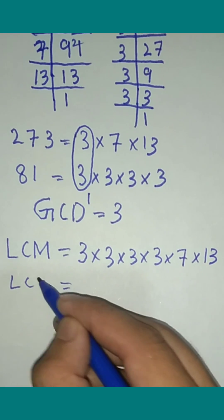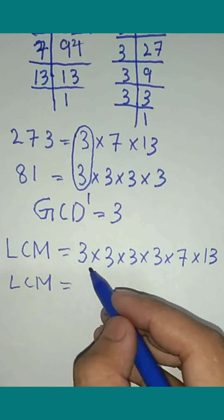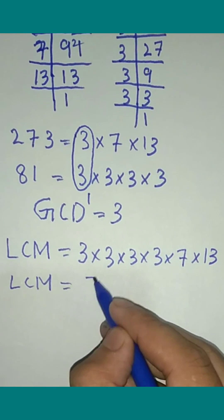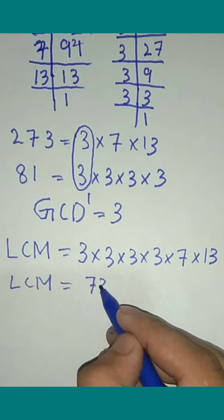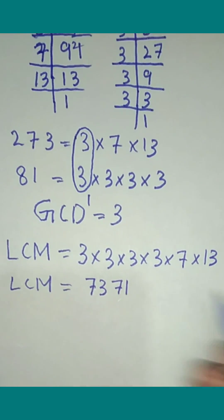So the LCM is found by multiplying all the terms: 7 x 3 x 7 x 1. So the LCM is calculated.